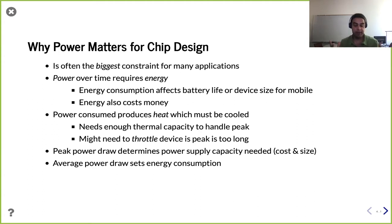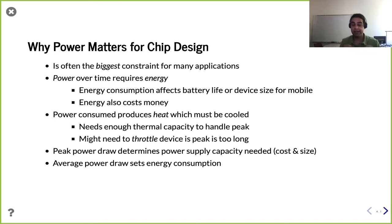If you have a fixed-size device, reducing energy consumption affects battery life. If you make your processor more efficient, you can have longer battery life or a smaller device. For a smartphone, most designs are predicated around what constitutes reasonable use, then ensuring there's enough battery life to last a day at that rate. That sets a certain size and weight constraint for the battery.